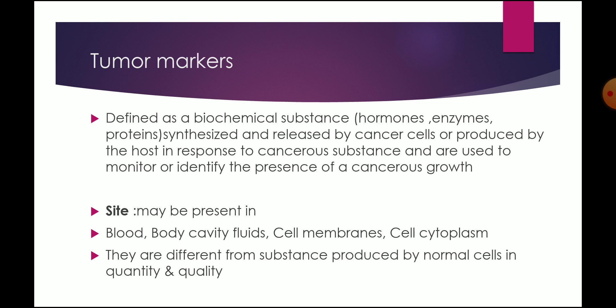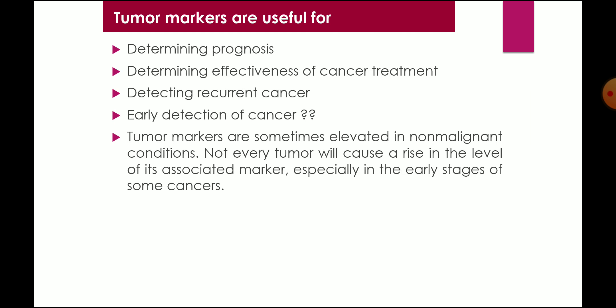Tumor markers may be present in blood, body cavity fluids, cell membranes, and cell cytoplasm — not only in the blood but also in tissues. They are different from substances produced by normal cells in their quantity and quality. There are various types of tumor markers that you need to know.